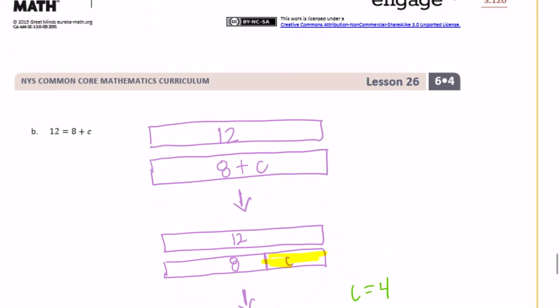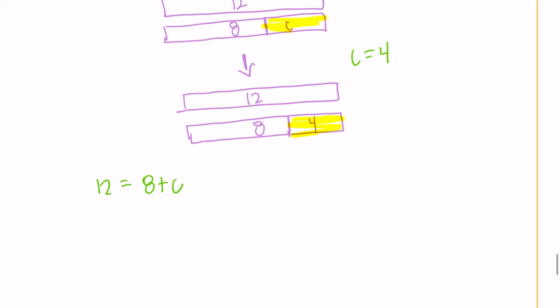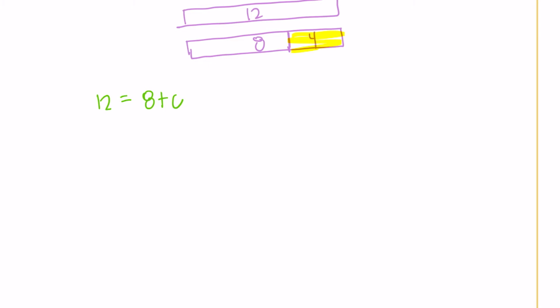Now let's do the algebraic method. 12 is equal to 8 plus c. We want to get c by itself, so I need to get rid of the 8 by subtracting 8. So 8 plus c minus 8 gives just c. What I do on one side I have to do on the other, so I subtract 8 from the left side too: 12 minus 8 equals 4, and 8 plus c minus 8 is just c. So c equals 4. Checking: 12 equals 8 plus 4. True.